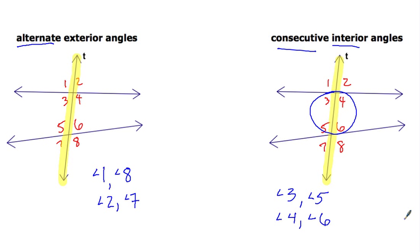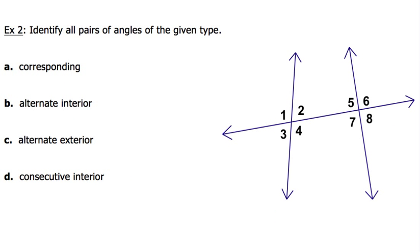If you think you have the names of these four types down, go ahead and try example two on your own and see how you do. If you want to go through it together, we'll get started now. We've got to identify all pairs of angles of the given type. Let's first identify where our transversal is — that's going to be this line right here.